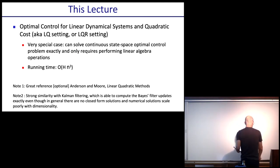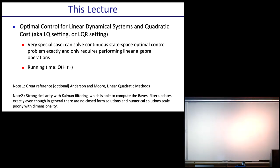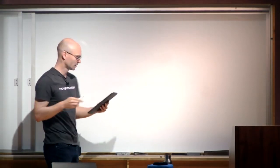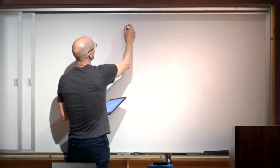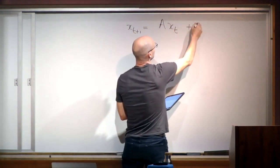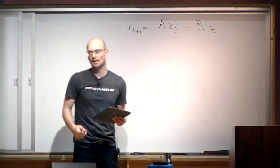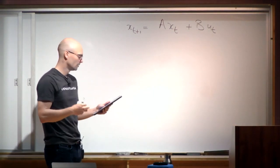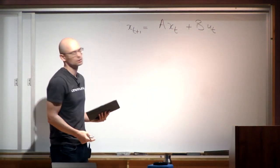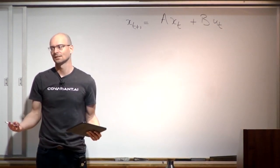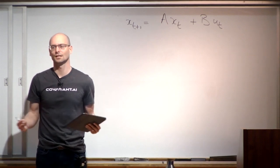The LQR setting assumes a linear dynamical system: X_{t+1} equals matrix A times X_t plus matrix B times U_t. State is denoted by X, controls or actions by U. It also assumes a quadratic cost function. In the optimal control literature it's more customary to work with cost rather than reward. If you want to work with rewards, the negative cost is your reward, and you have the same problem.